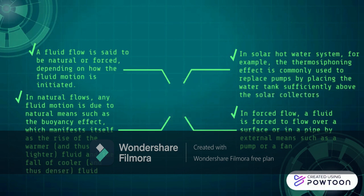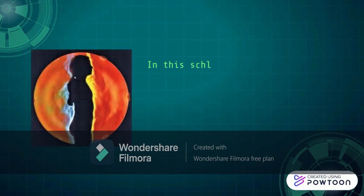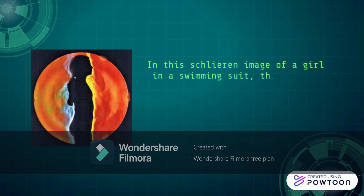In natural flows, any fluid motion is due to natural means such as the buoyancy effect, which manifests itself as the rise of warmer and thus lighter fluid and the fall of cooler and thus denser fluid. For example, flow caused by winds is due to changes in temperatures and pressures. In a solar hot water system, the thermosiphoning effect is commonly used to replace pumps by placing the water tank sufficiently above the solar collectors.